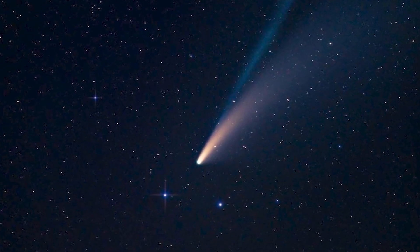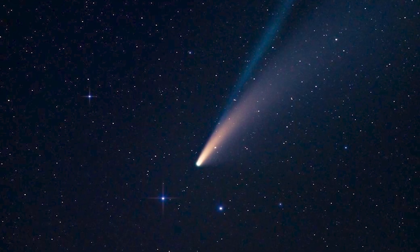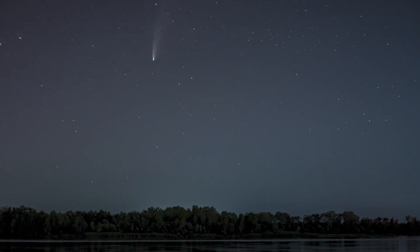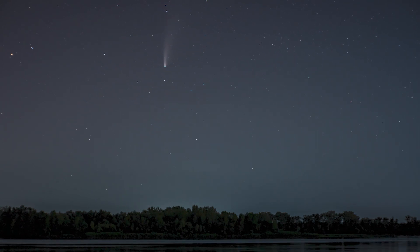Comet 238P Read is a main-belt comet. It's hosted within the main asteroid belt, but sometimes has a comet-like halo and tail.